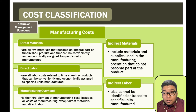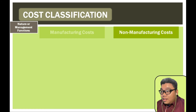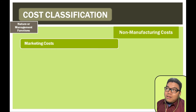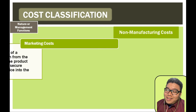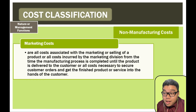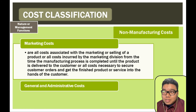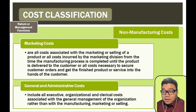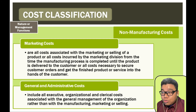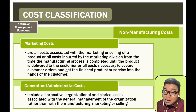Non-manufacturing costs are composed of marketing costs — costs incurred to sell the product — and general and administrative costs, which include accounting costs, warehousing costs, and any cost related to the day-to-day operation of the business that is not directly attributable to the production of the item.